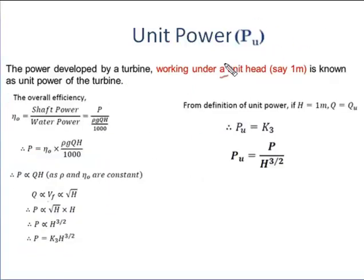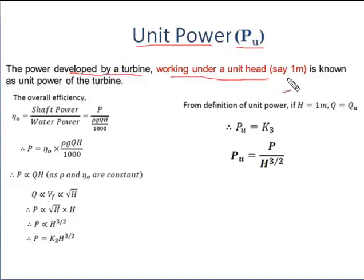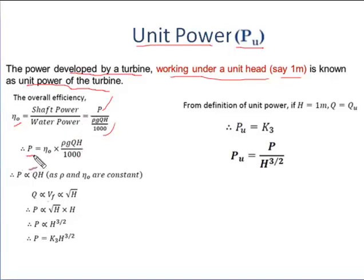We now come to the last unit quantity, unit power, represented by P_u. The power developed by the turbine working under a unit head of one meter is known as the unit power of the turbine. Overall efficiency is the ratio of shaft power to water power. Water power equals ρgQH / 1000, so P is directly proportional to Q·H.